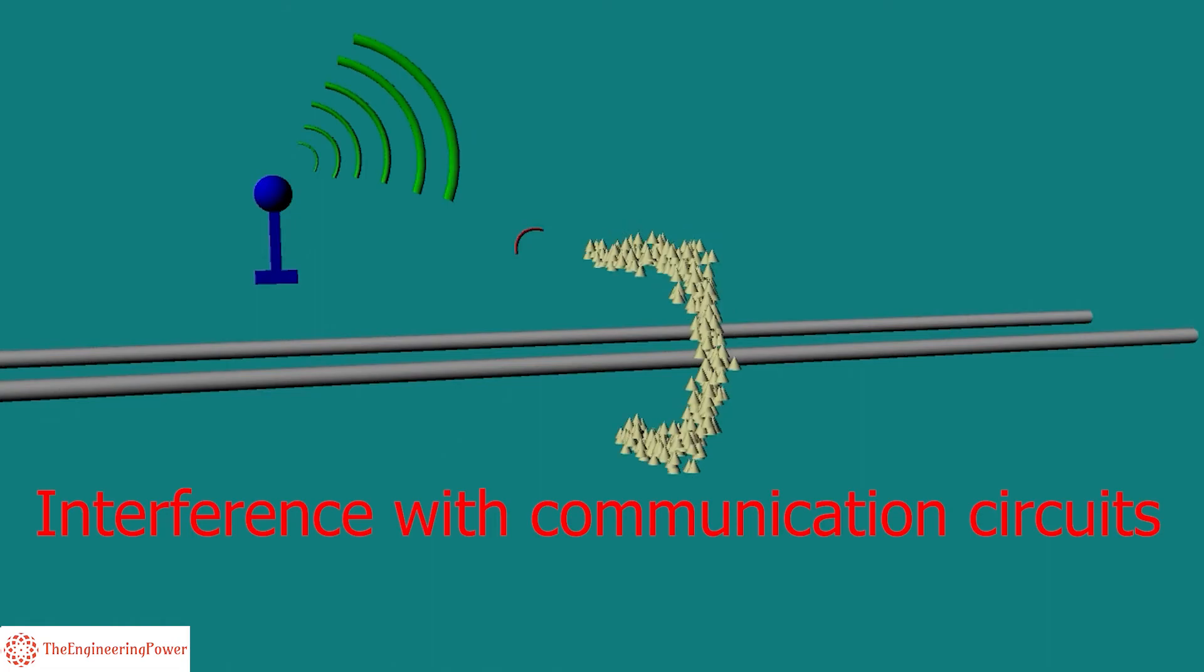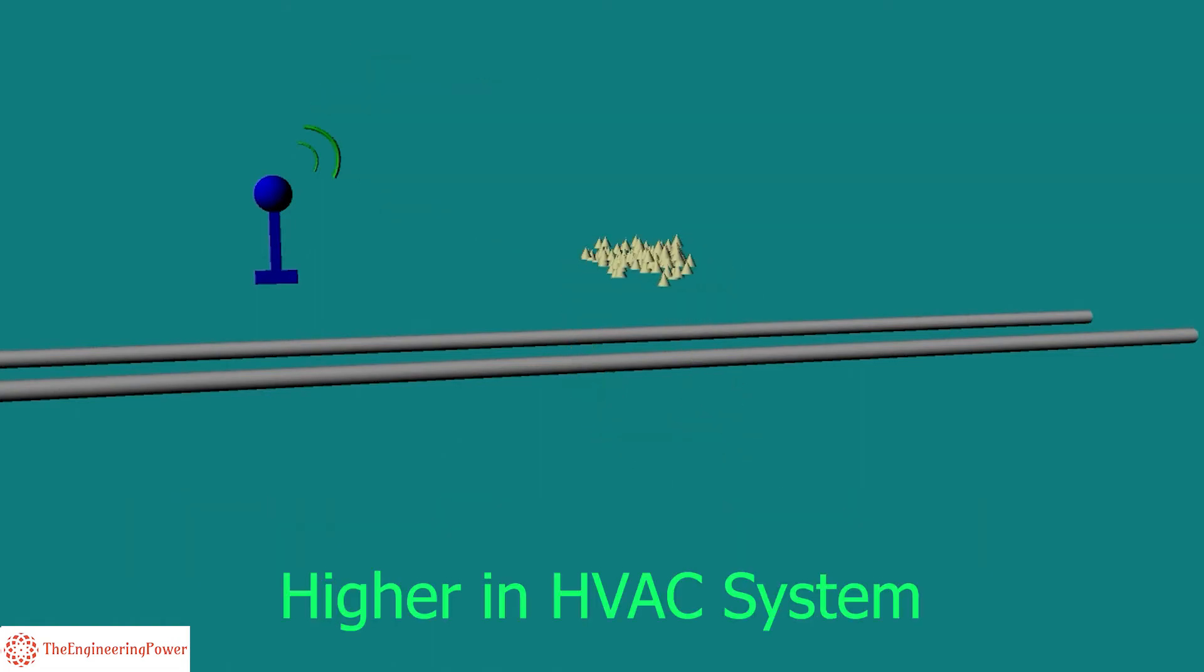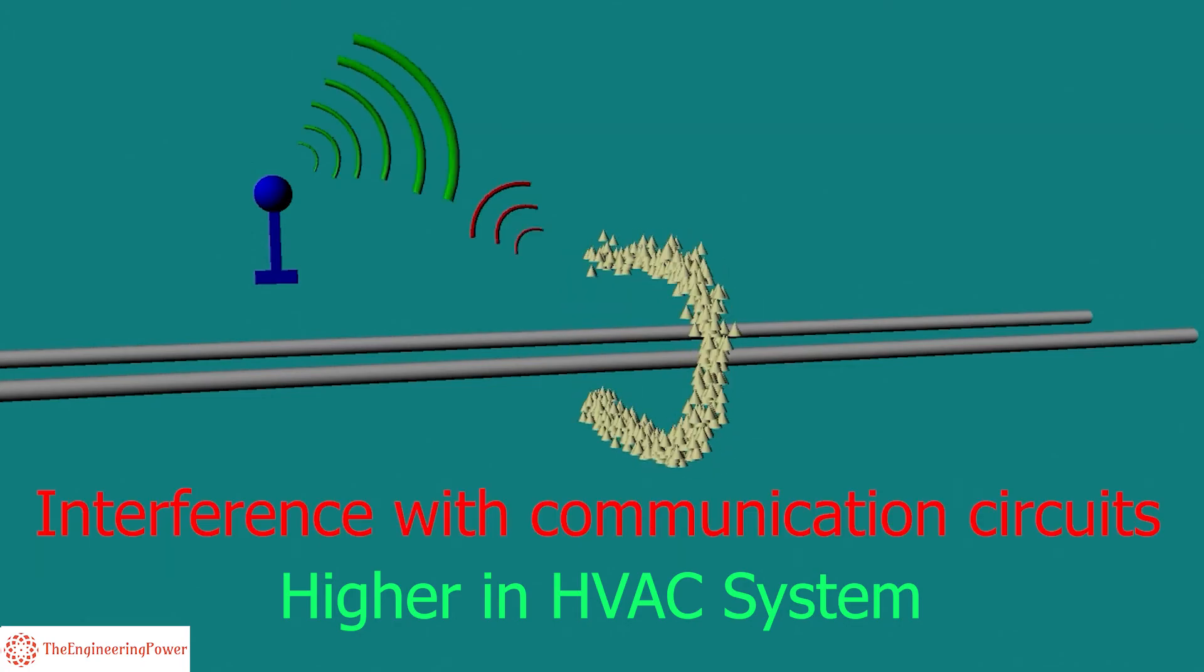Interference with communication lines. Electromagnetic interference with nearby communication lines is higher in HVAC systems as compared to HVDC system.